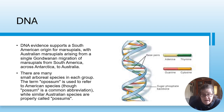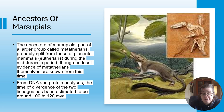DNA evidence supports the South American origin for marsupials, with Australian marsupials arising from a single Gondwana migration of marsupials from South America across Antarctica to Australia. There are many arboreal, meaning tree-living, species in each group. The term opossum is used for South American species, although possum is commonly used in Australia.